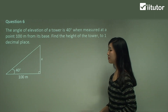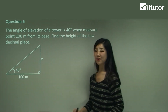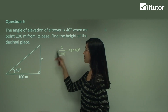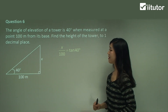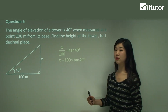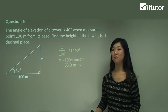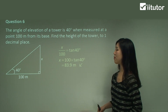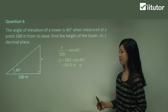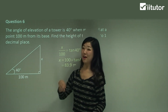We need to find x, the height of the tower. This is the angle 40 degrees, x is the opposite side, and 100 is the adjacent side. So I'll use tan: tan 40 = x over 100. Solving for x: x = 100 × tan 40. Put that into your calculator and you should get 83.9 meters. That's the height of the tower. The key thing is the angle of elevation from this point looking up to the tower is 40 degrees.